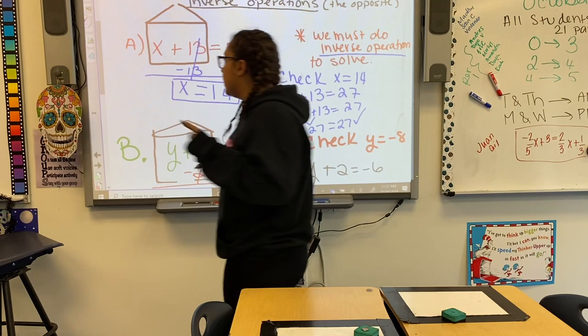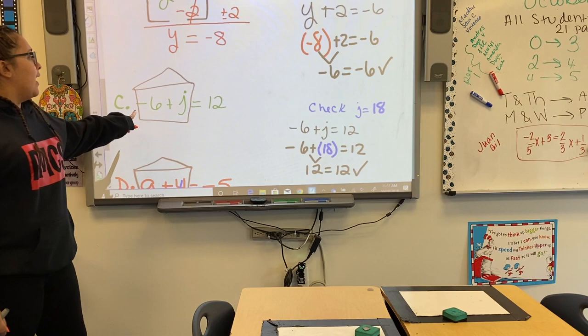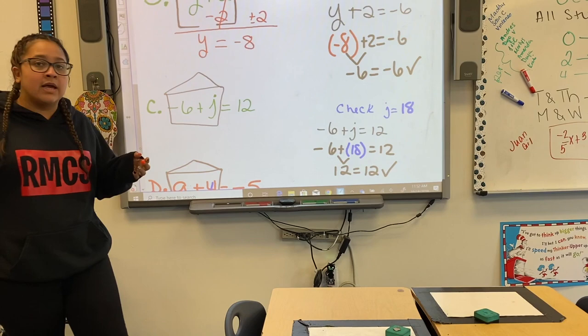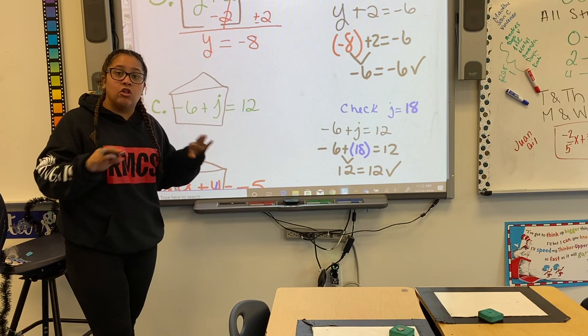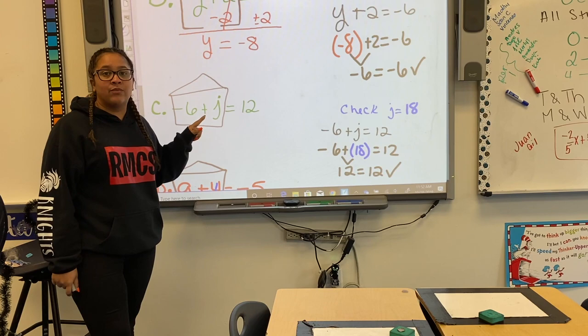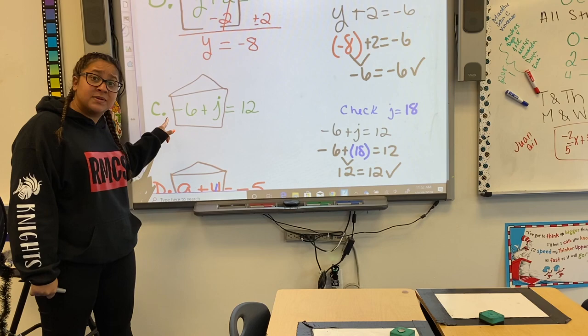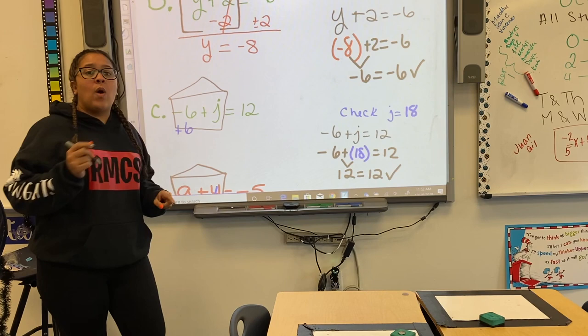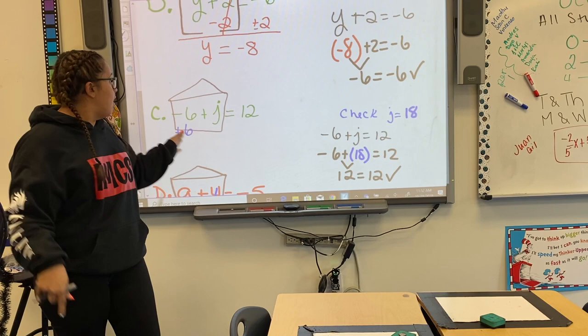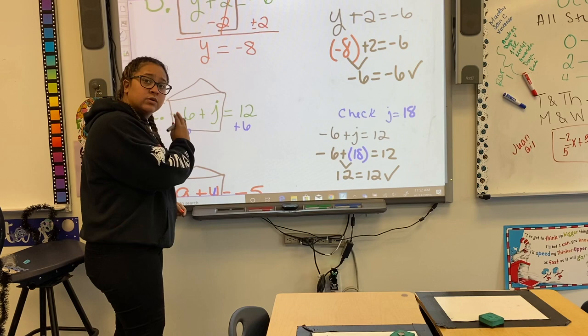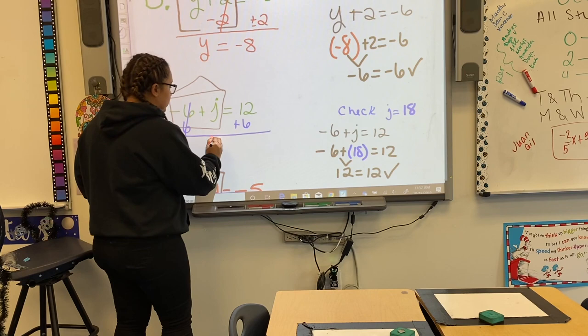Now let's do an example with a negative number. Here we have negative 6 plus j equals 12. Again, whose house is it? It's j's house. Who do we have to kick out so that j can be alone on that side of the equal sign? The negative 6. How do we kick him out? Inverse operation. What is the inverse operation — the opposite — of negative 6? Positive 6. We do the inverse operation so that it cancels out the term we're trying to move. We bring it to the other side as well because what we do on one side of the equal sign, we do to the other. So it cancels out and we get j equals 18.